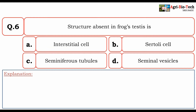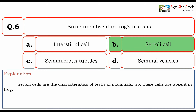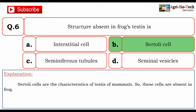Next question: the structure absent in frog testes is — interstitial cells, Sertoli cells, seminiferous tubules, or seminal vesicles? The correct option is B: Sertoli cells. Sertoli cells are characteristic of the testes of mammals, so these cells are absent in frogs.